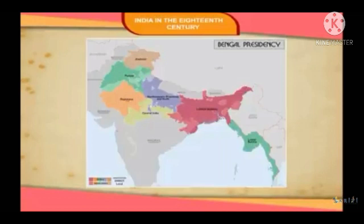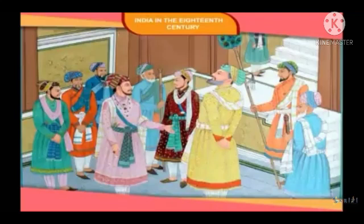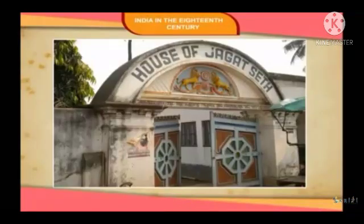Under Murshid Kuli Khan, Bengal's revenue administration improved remarkably. He transferred Mughal jagirdars of Bengal to Odisha, converting their jagirs into crown land. This reduced Mughal authority in Bengal. Murshid Kuli also got all the cultivable land surveyed and fixed new rates of revenue. He appointed revenue collectors who were made to sign contracts to make timely payments to the state. These contractors later became Zamindars, or landlords.